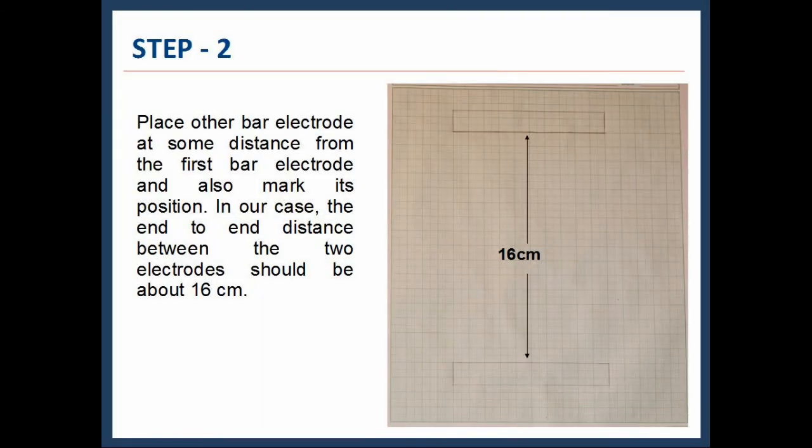In the second step, place the other bar electrode at some distance from the first bar electrode and also mark its position. In our case, the end-to-end distance between the two electrodes should be about 16 centimeters.